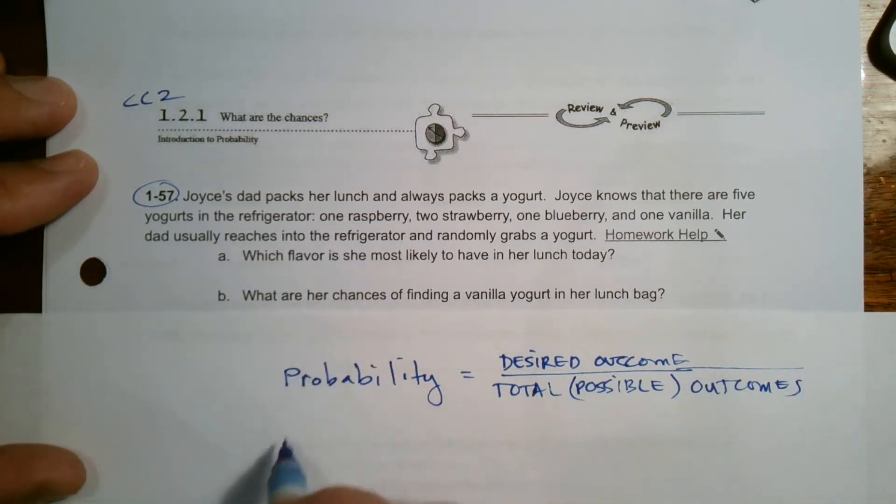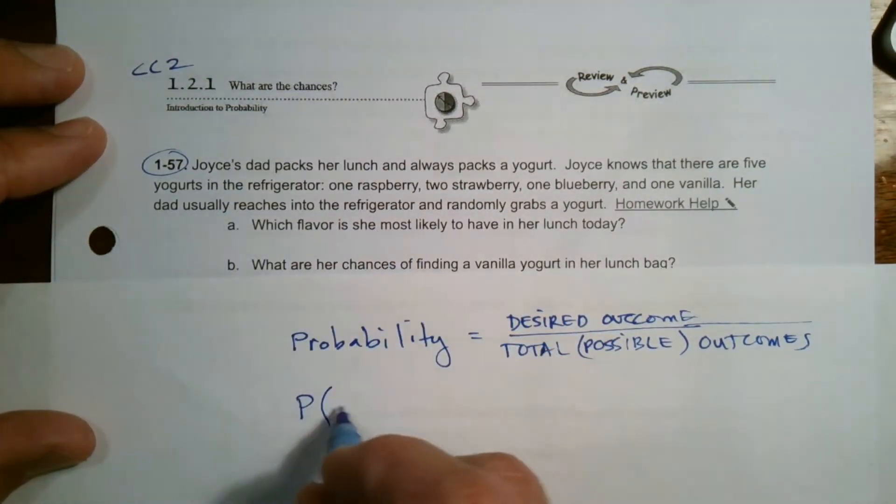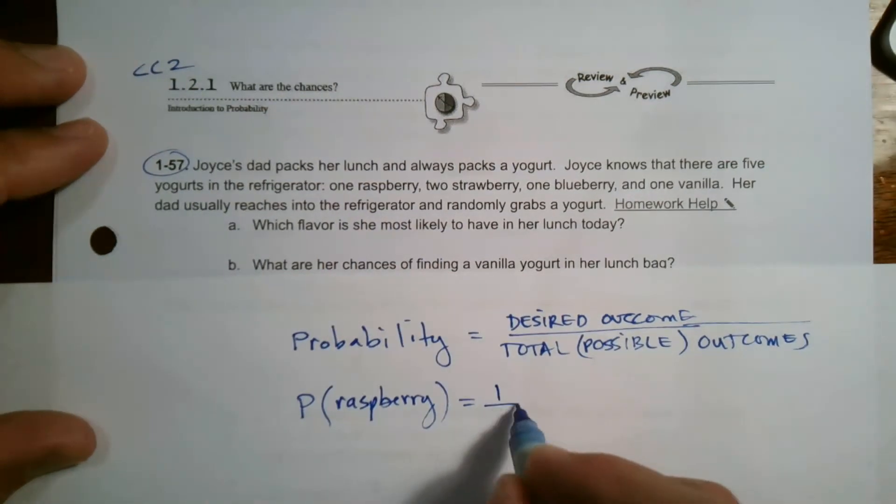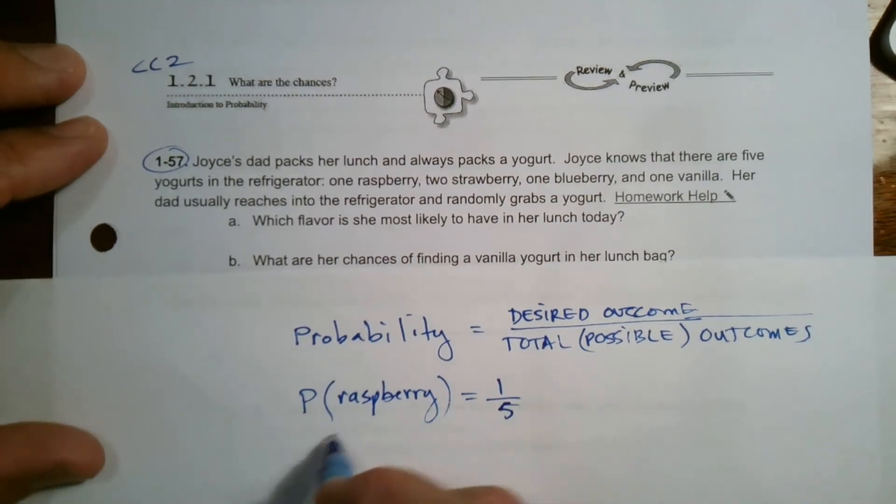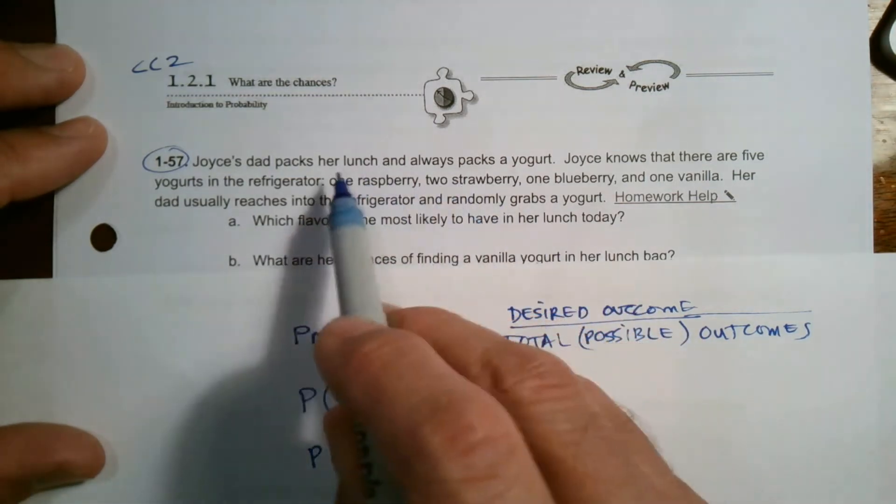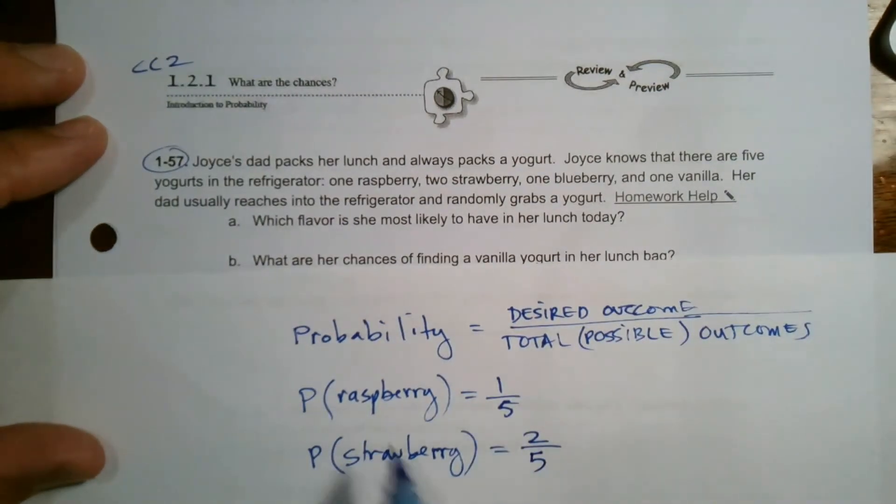The probability of getting raspberry—there's only one raspberry out of five yogurts. Then the probability of strawberry—there are two strawberries out of the total five. So raspberry is 1/5, and strawberry is 2/5.